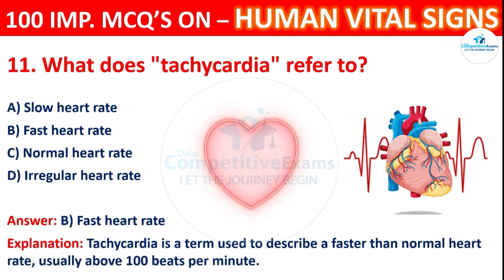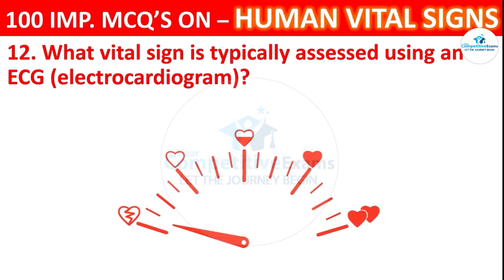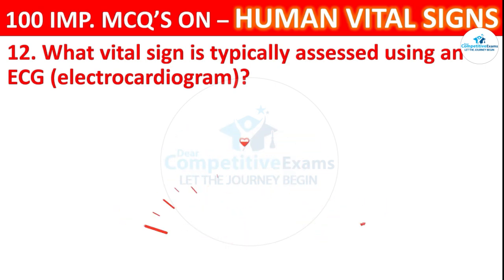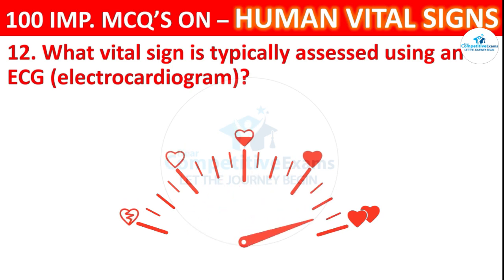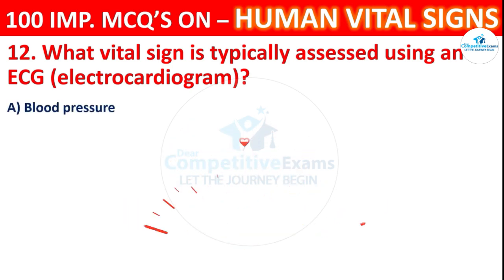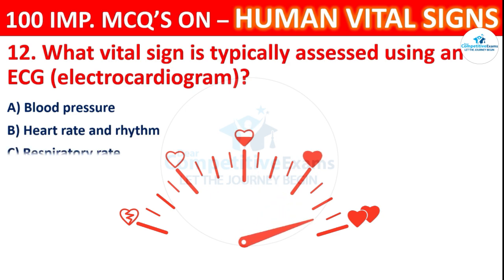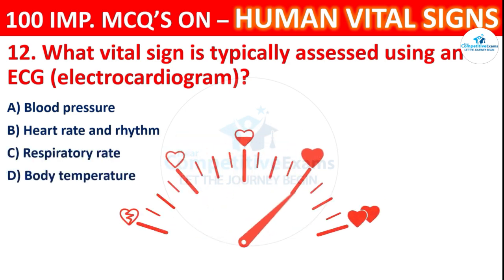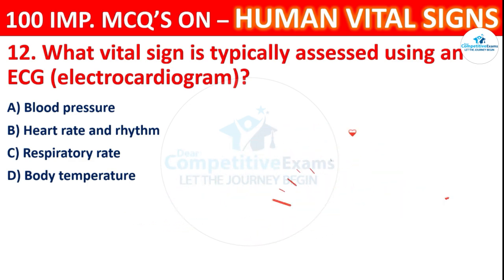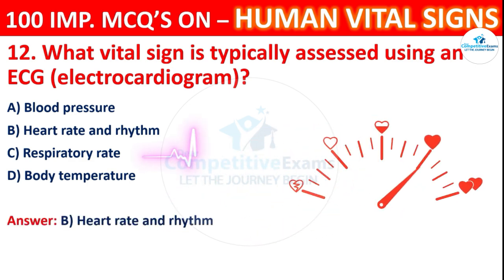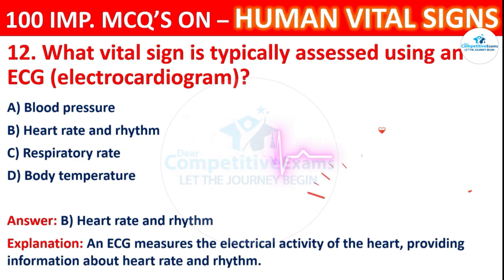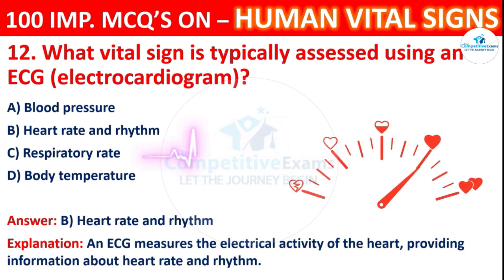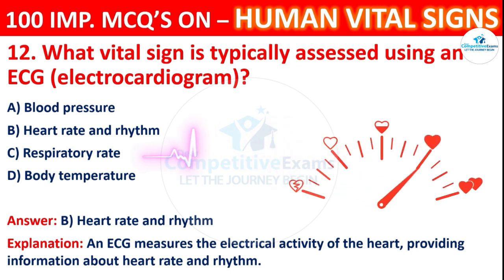Question 12: What vital sign is typically assessed using an ECG (electrocardiogram)? Options: blood pressure, heart rate and rhythm, respiratory rate, or body temperature. The correct answer is B, heart rate and rhythm. An ECG measures the electrical activity of the heart, providing information about heart rate and rhythm.